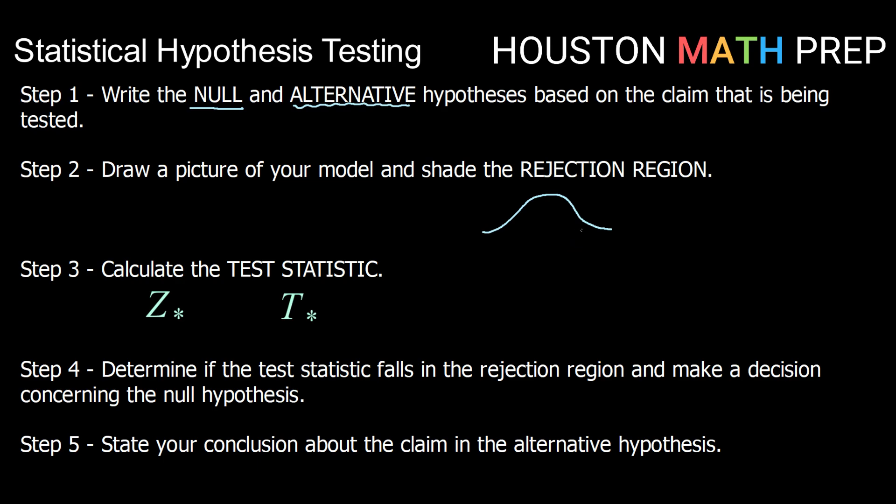Now rejection regions are going to be the idea that we are going to draw a distribution based on the null hypothesis. Assuming that the null hypothesis is true, we're going to create a distribution for that. Then, based upon the alternative hypothesis, whether it's greater than, less than, or not equal to, we're going to be looking at probabilities and areas. So again, more on that coming in future videos.